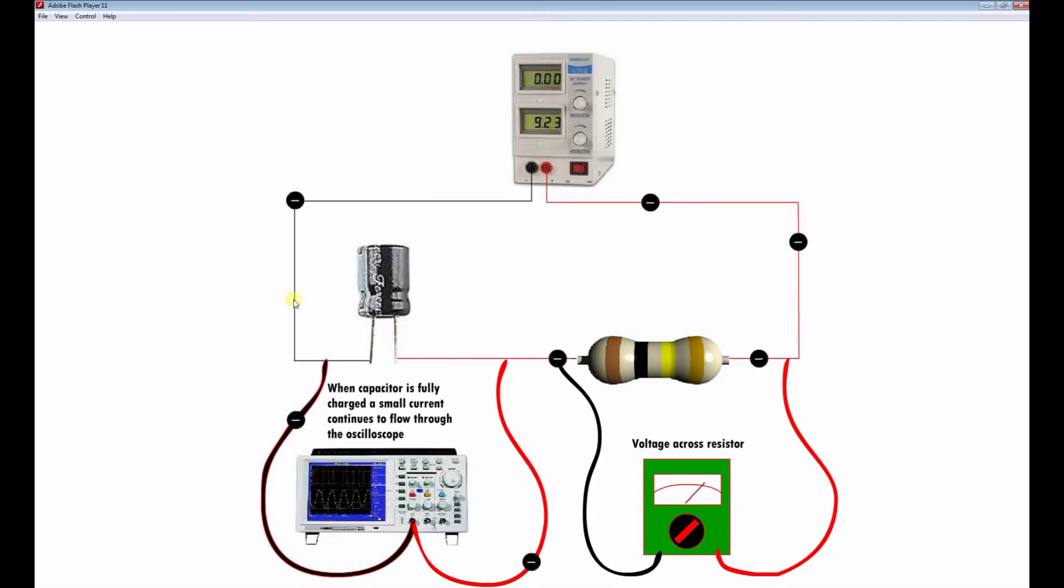What this means is that the oscilloscope allows a small amount of current to flow through it. In other words, it bypasses the capacitor. Just a little bit of that current bypasses the capacitor.